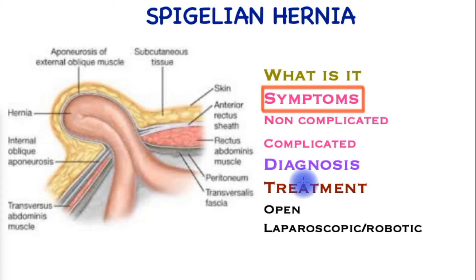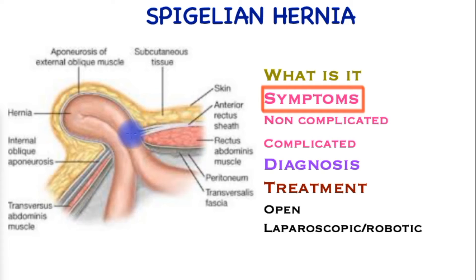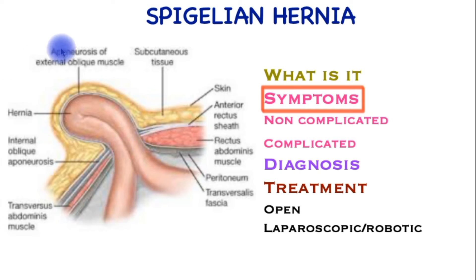The strangulated hernia is typically very painful and hard. It does not go back in and may have other symptoms such as abdominal pain away from the site of the hernia, vomiting, and significant debility.